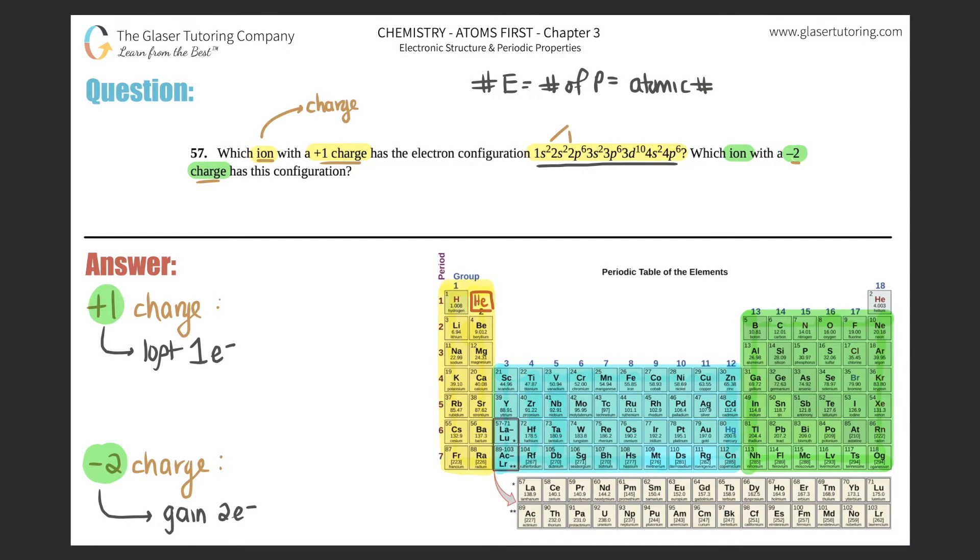Let's find out what the pseudo element is. All we have to do is count up all the total electrons, and those are the upper right hand corners: the two, two, six, two, six, ten, two, and six.